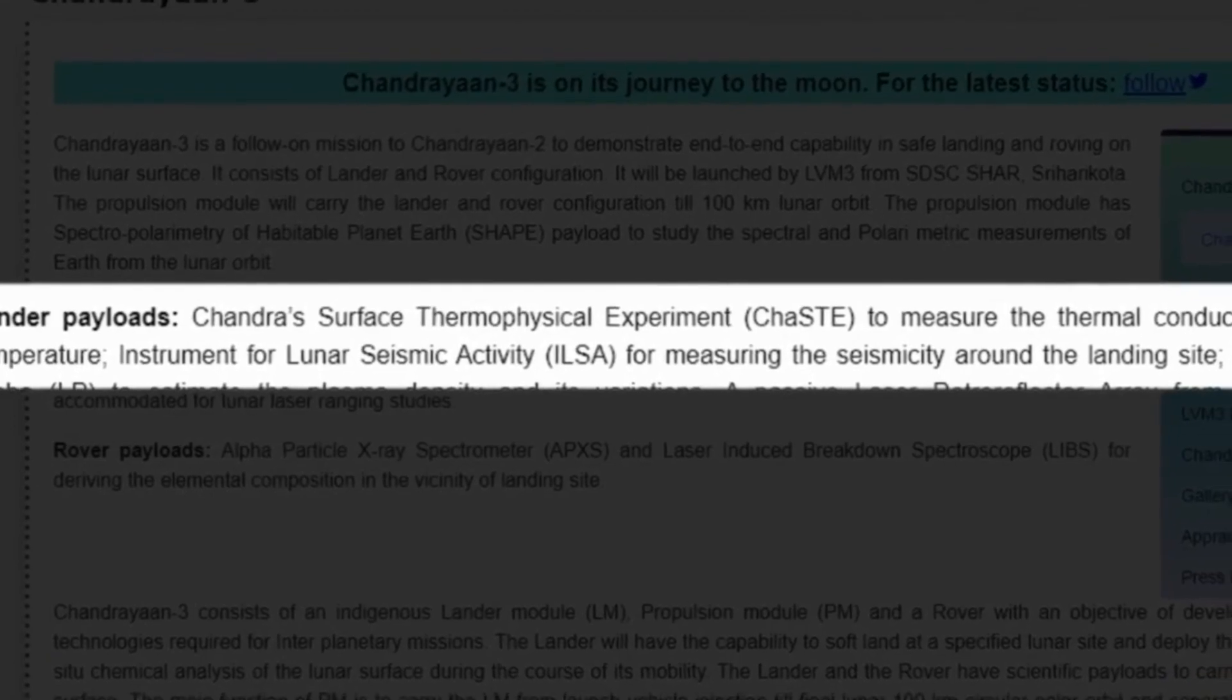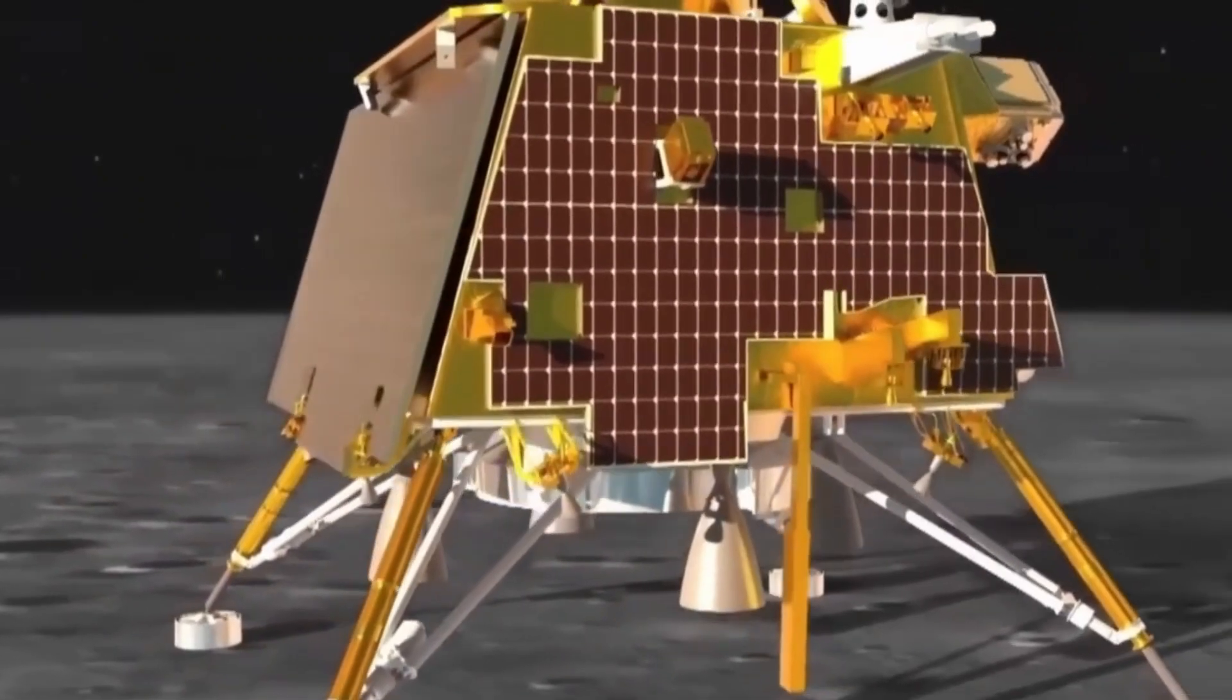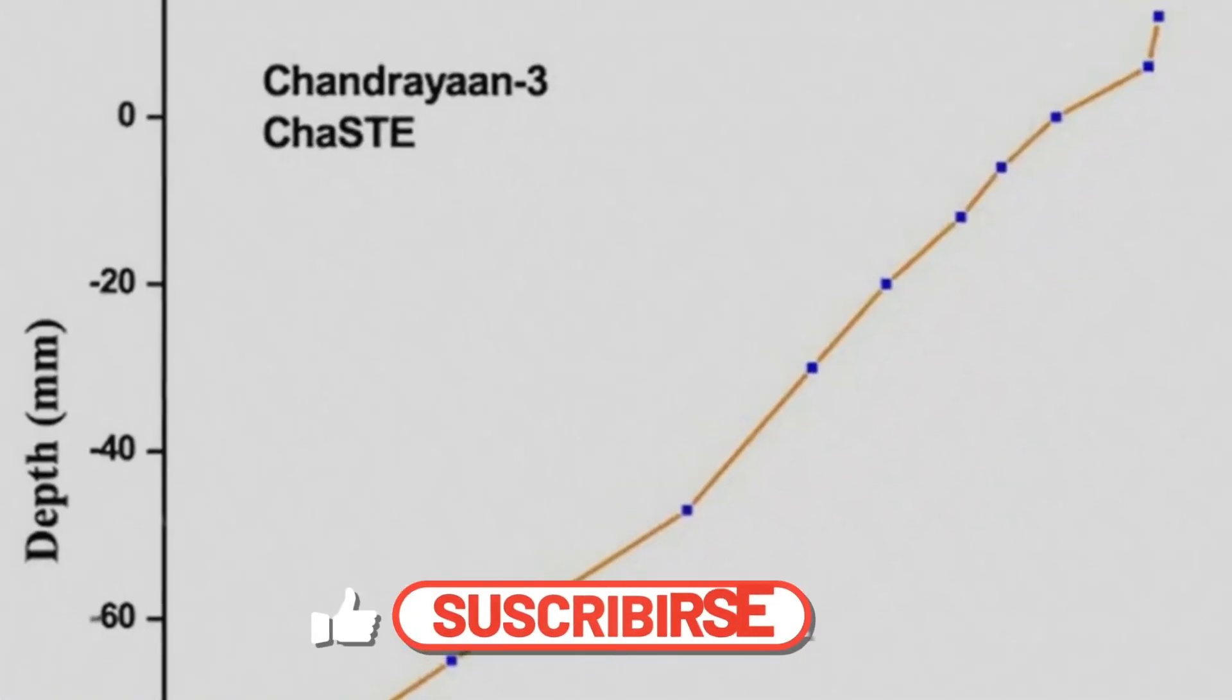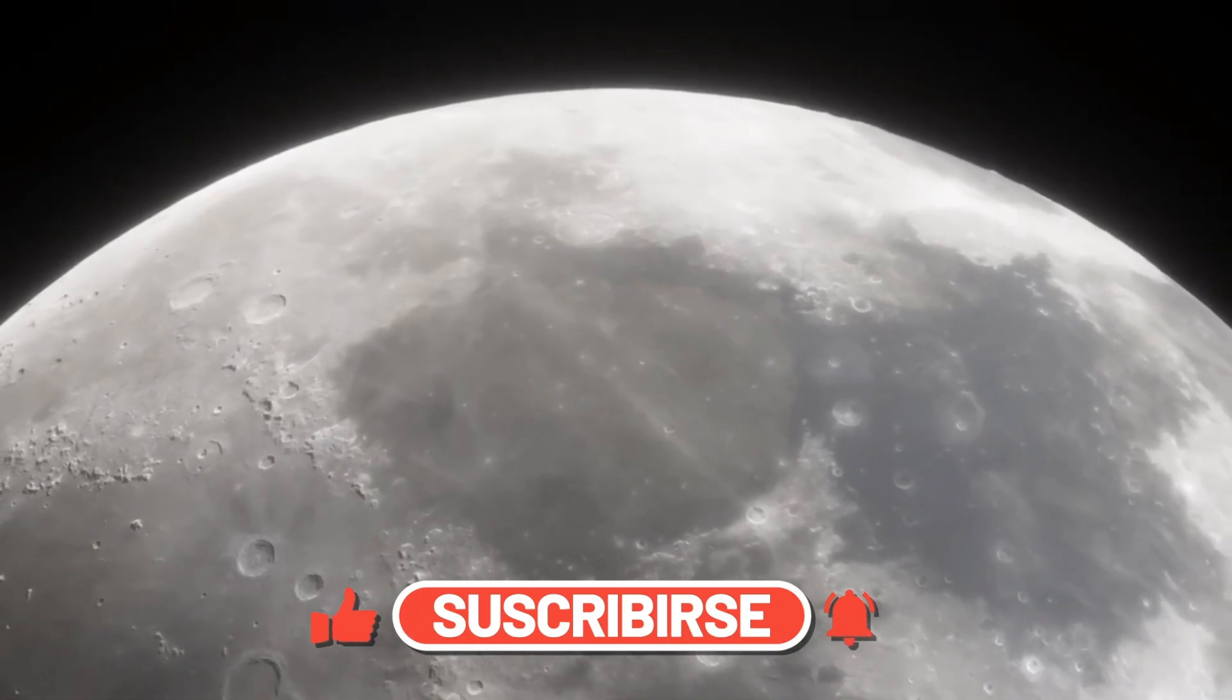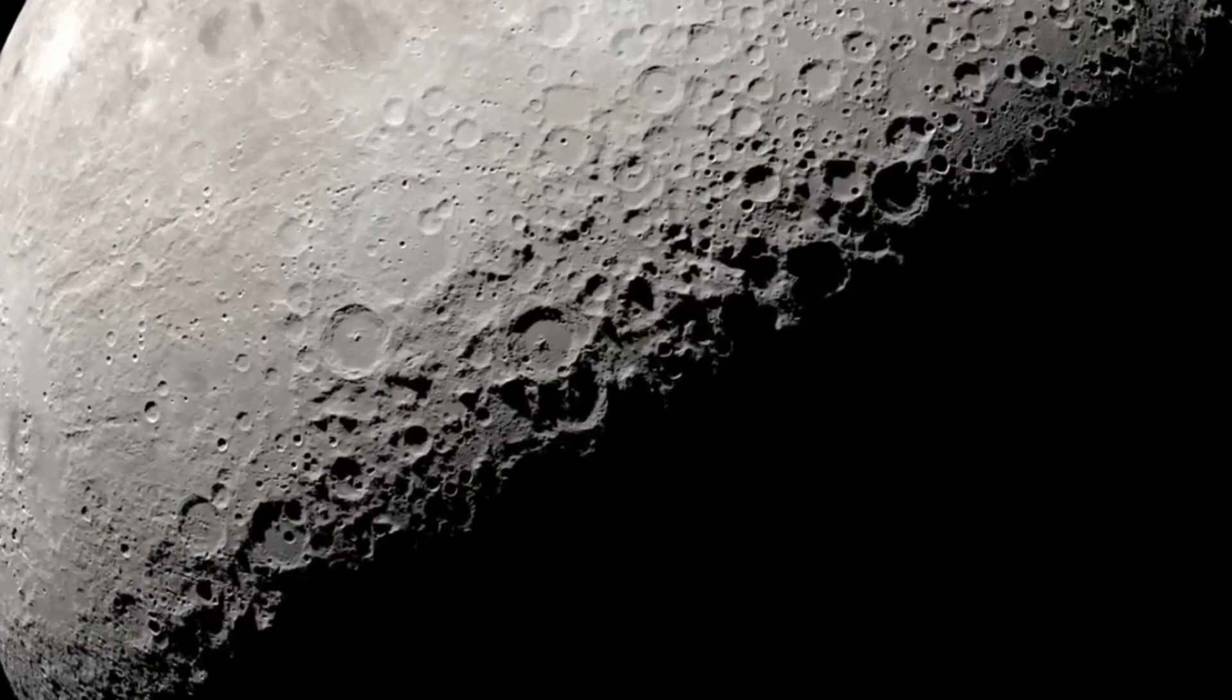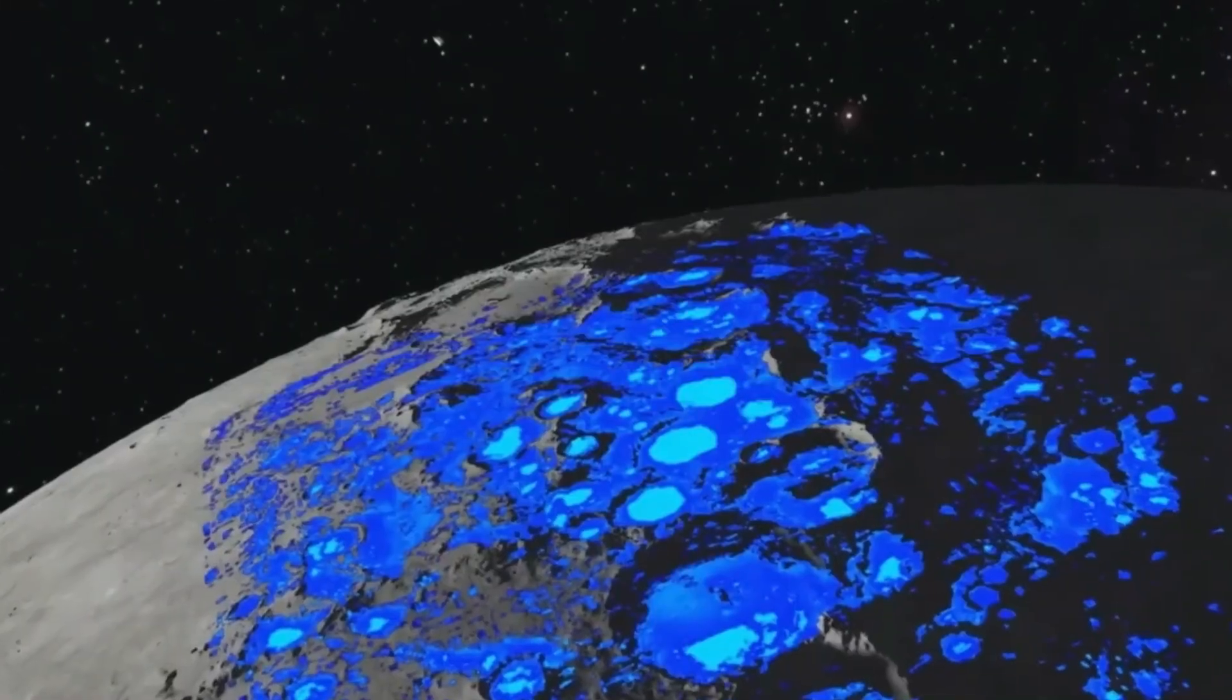Some of the key payloads and discoveries of Chandrayaan-3 include ChaSTE. This payload measures the temperature profile of the lunar soil at different depths, ranging from 10 centimeters to 100 centimeters. This is crucial for detecting water ice, as water ice can only exist below a certain temperature threshold. ChaSTE has found that the temperature near the south pole is much lower than other regions of the moon, indicating a higher possibility of water ice.